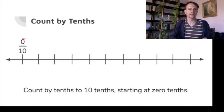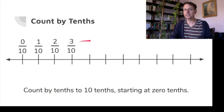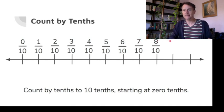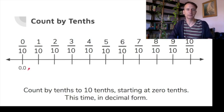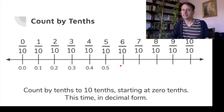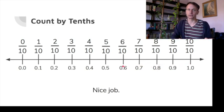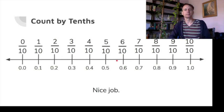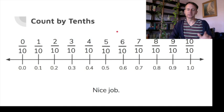Let's count by tenths: zero tenths, one tenth, two tenths, three tenths, four tenths, five tenths, six tenths, seven tenths, eight tenths, nine tenths, and ten tenths which equals one. Now in decimal form: zero tenths, one tenth, two tenths, three tenths, four tenths, five tenths, six tenths, seven tenths, eight tenths, nine tenths, and ten tenths — also known as one.